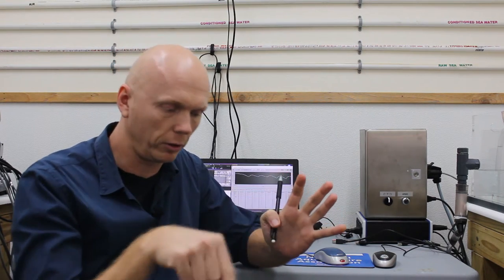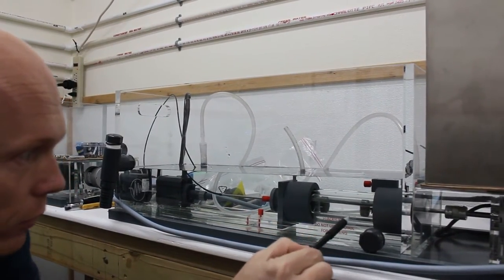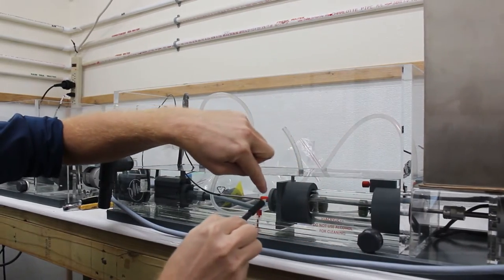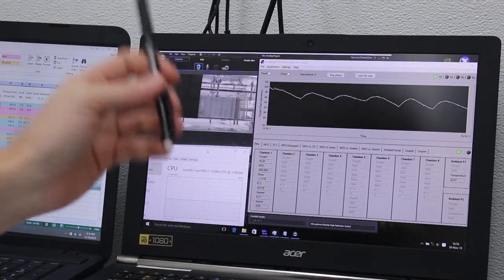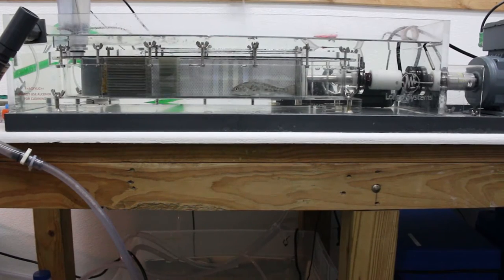So we have a sealed chamber with a propeller in there. We can control the water flow as it goes around and the fish have to swim against that. As it's swimming at different speeds, we can monitor the oxygen consumption of the animal and therefore oxygen consumption converts directly to calories burned.